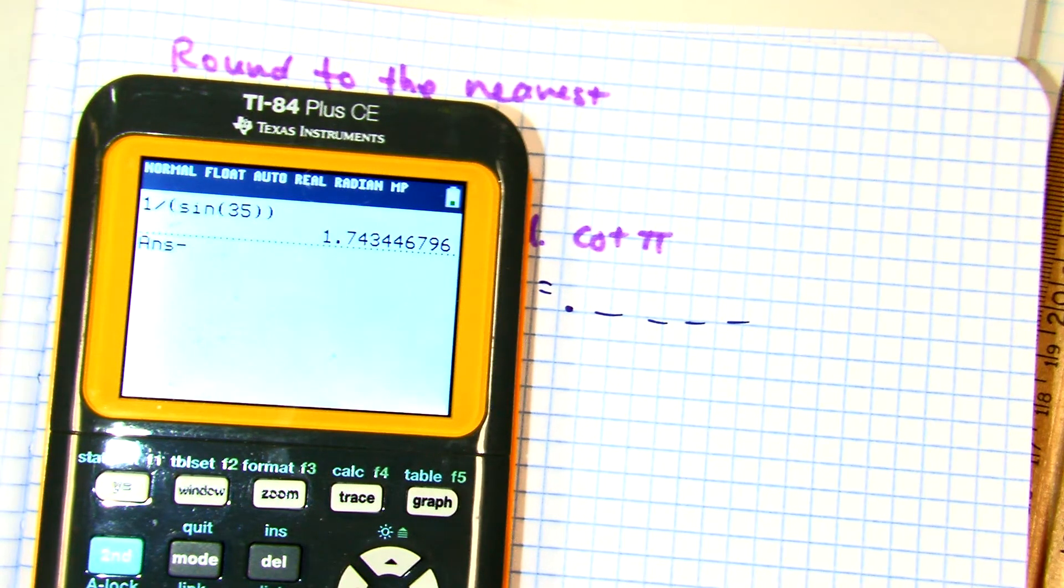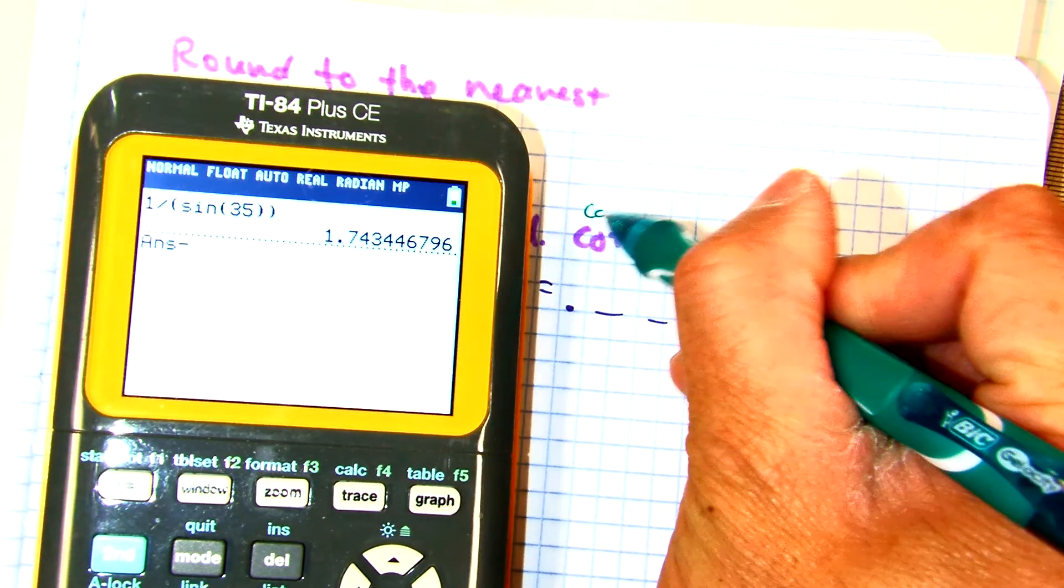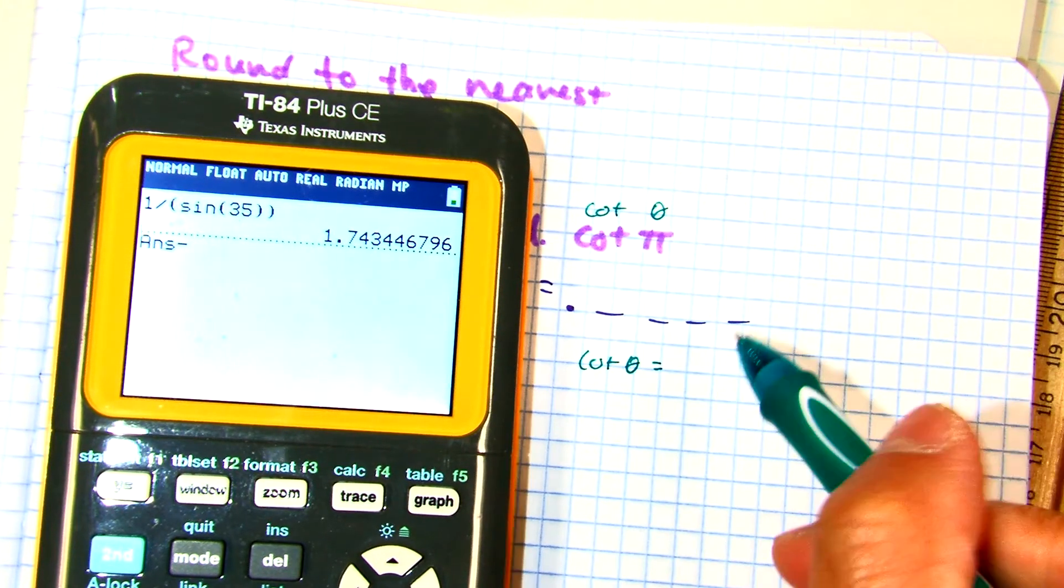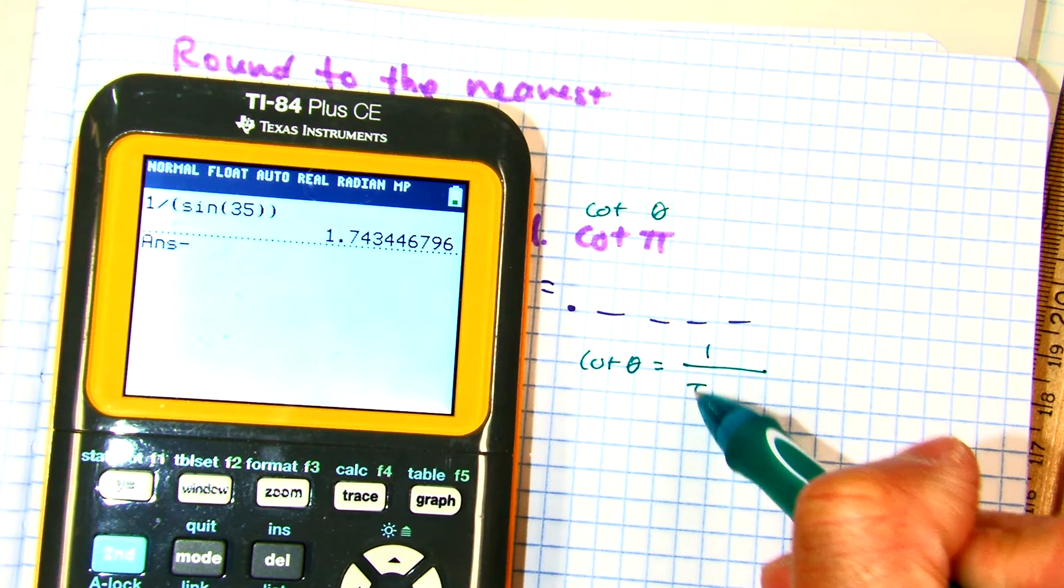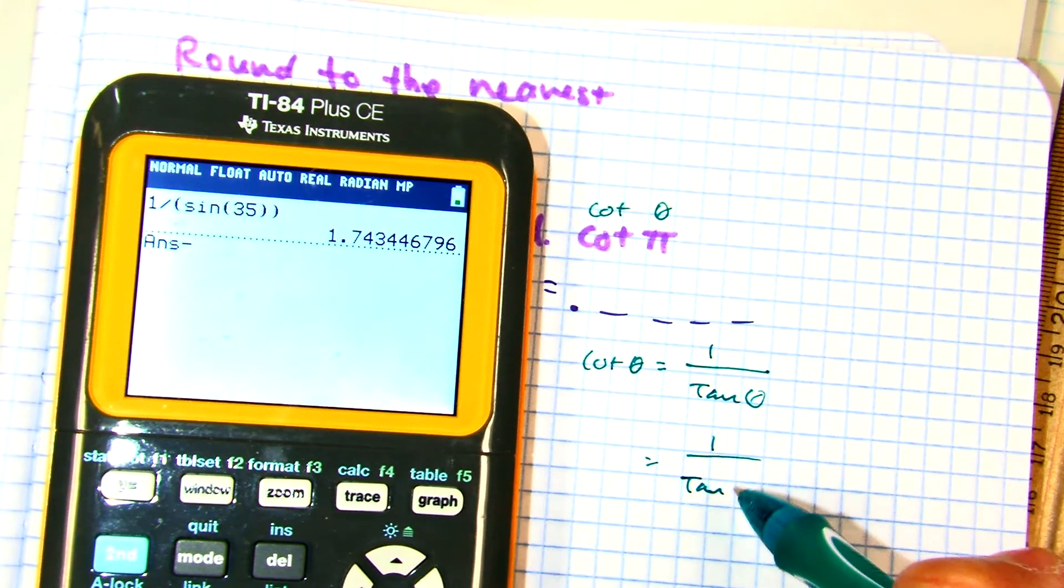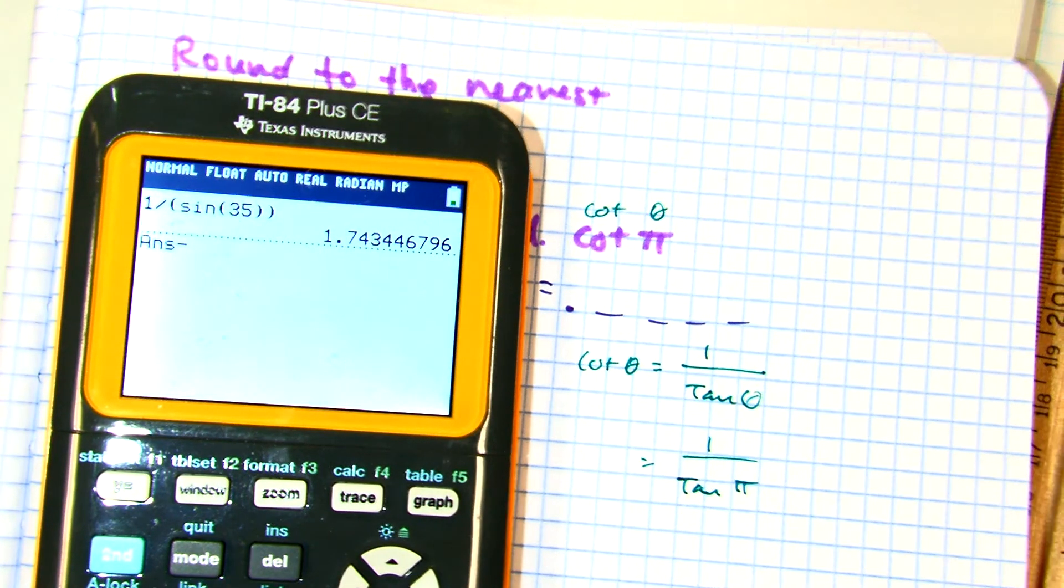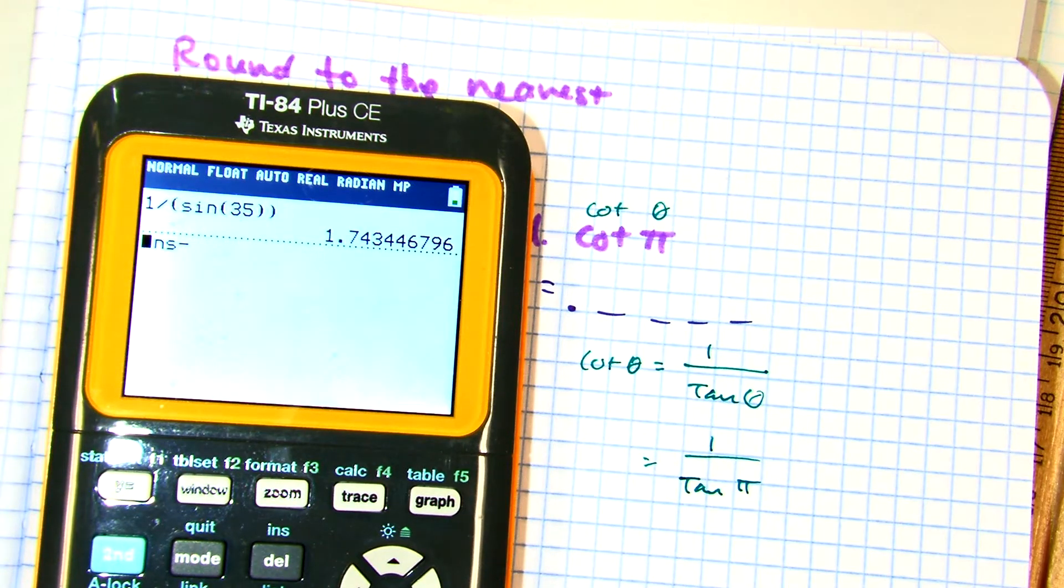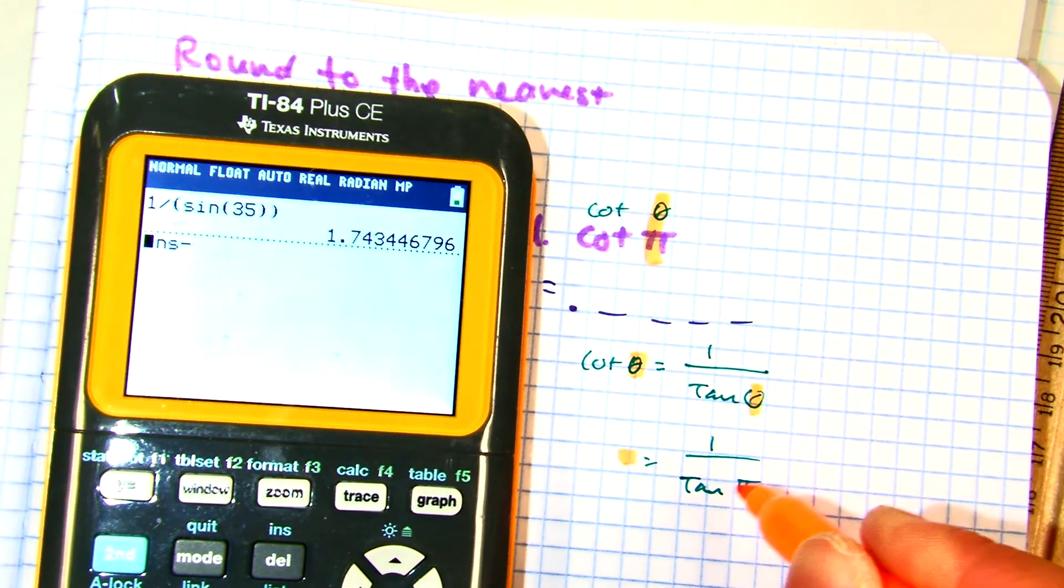Brian, is cotangent on your calculator? So, we have cotangent of theta. Cotangent of theta is equal to what, Brian? I'm going to have cotangent of pi. So, I'm going to have 1 over tangent of pi. That is my calculator-ready equation. Right? Theta is equal to pi.